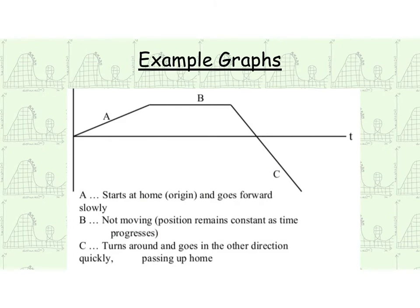Okay, so some more example graphs. So A, A is over here. We leave origin. We're going forward, but we're not going very fast, because you see this is not a very steep slope. In B, we are at rest, horizontal. We're staying at the same position. That means that we are not moving at all, so our velocity is zero.